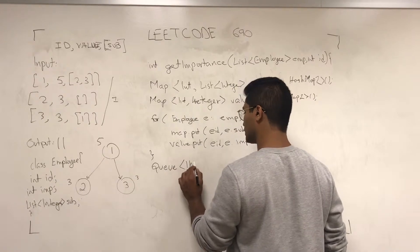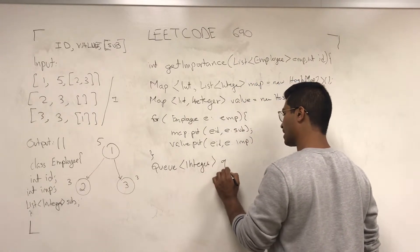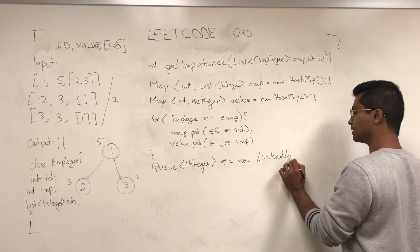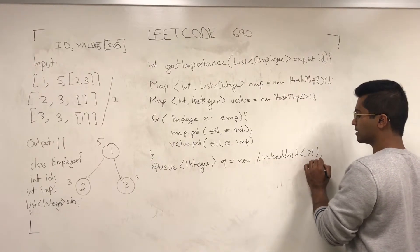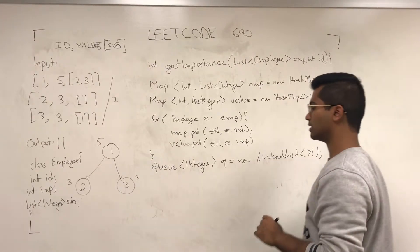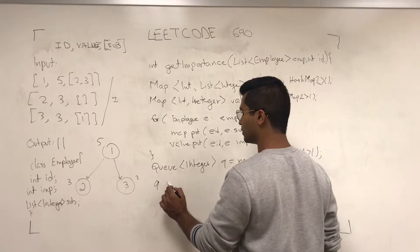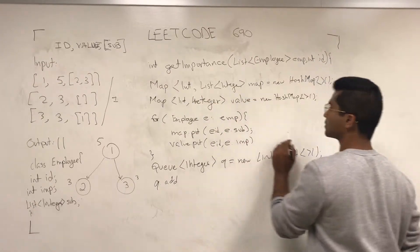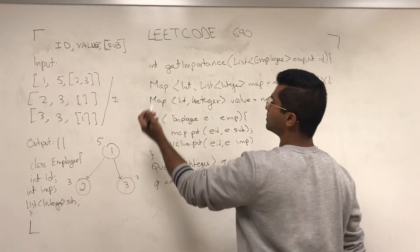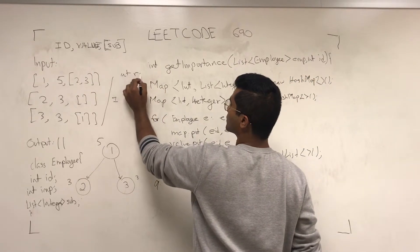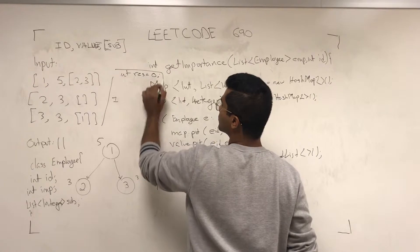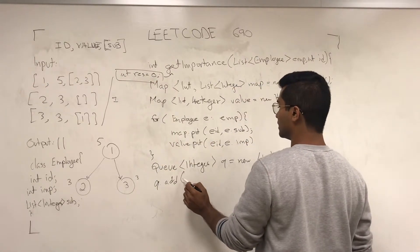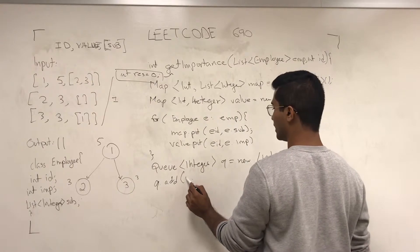A queue of integers — Queue is new LinkedList as the instantiation of it. And then queue.add. They want a result at the end, so let's make an int res initialized as zero — this is what we're going to return at the end. queue.add(id), so this is going to be the source origin. And then res is going to be incremented by value.get(id).